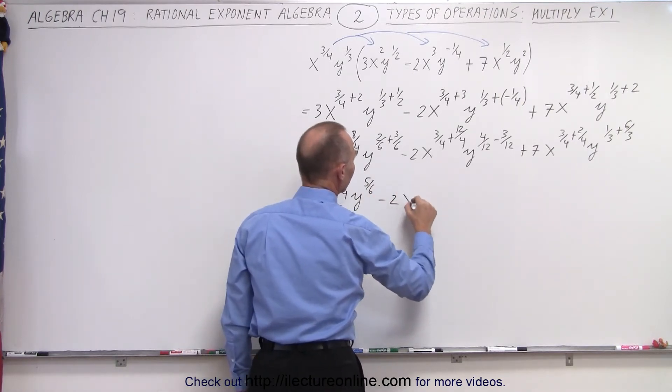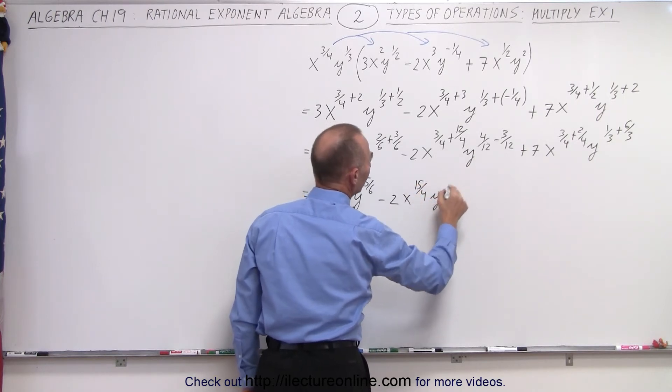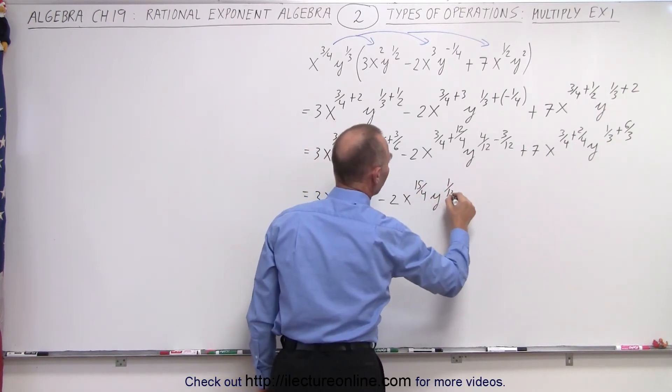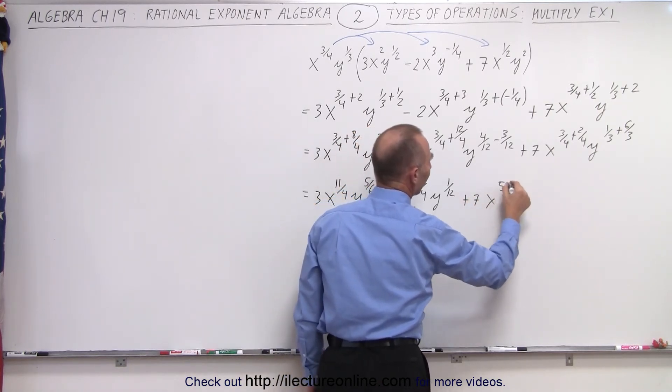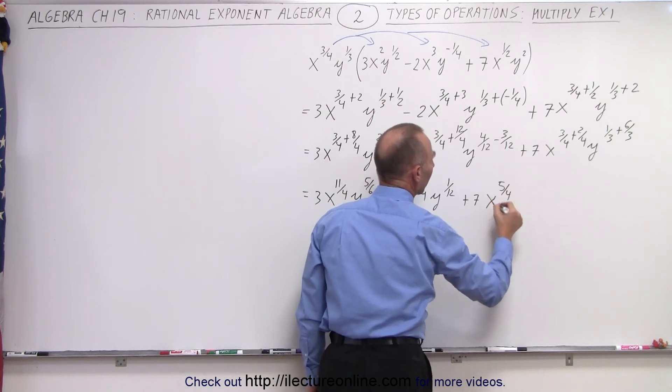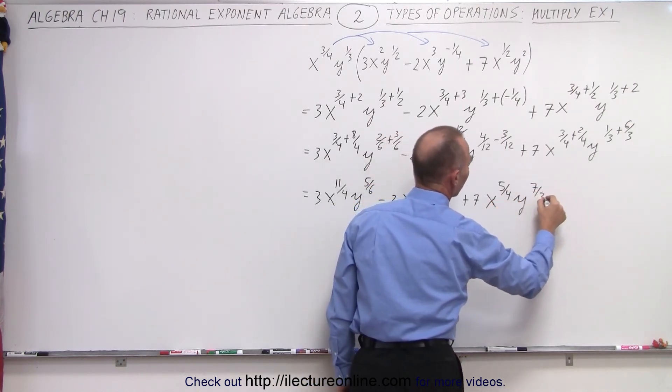Y to the two plus three would be five sixths minus two, that would be x to the three plus twelve is fifteen fourths, y to the four minus three, which is one twelfth, and then plus seven, x to the three plus two, which is five fourths, and we get y one plus six, which would be seven thirds.